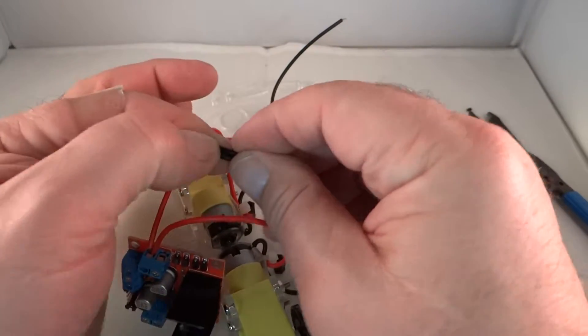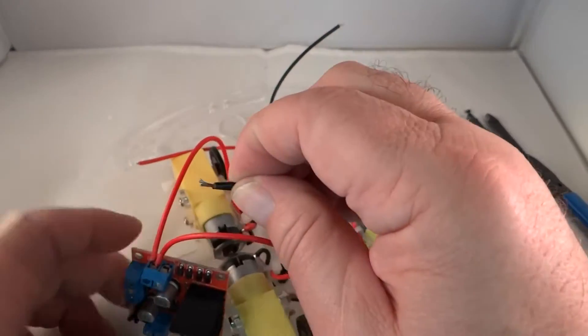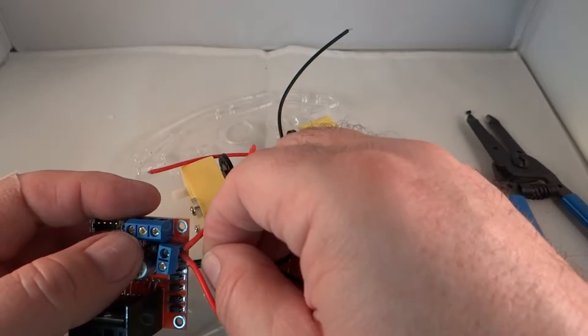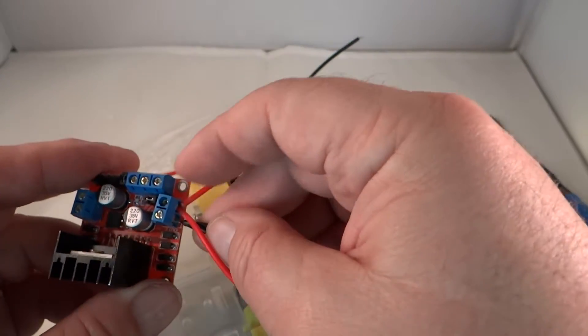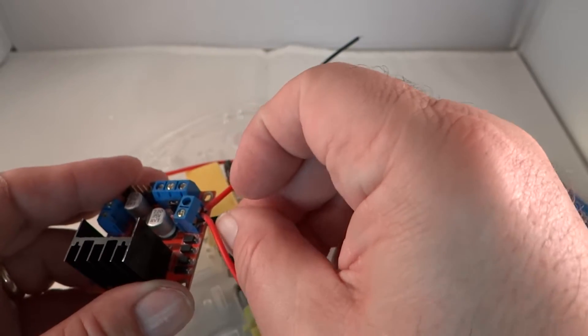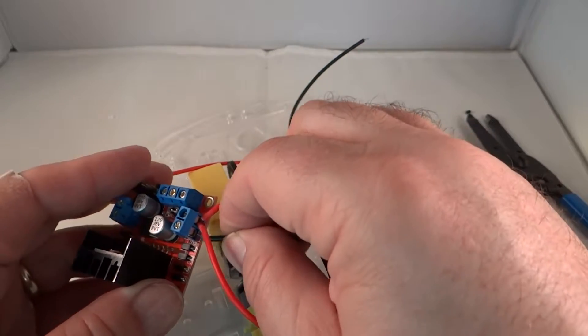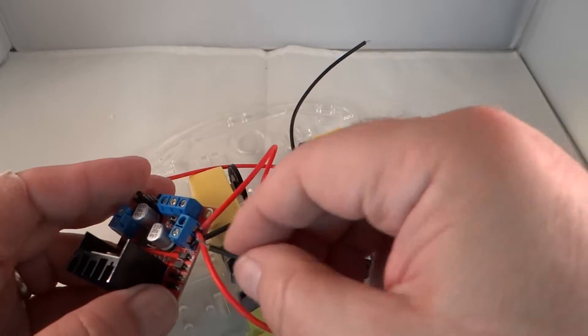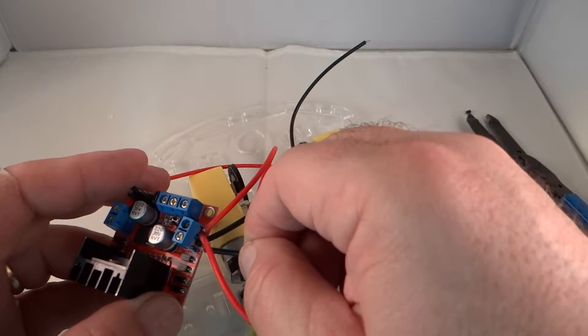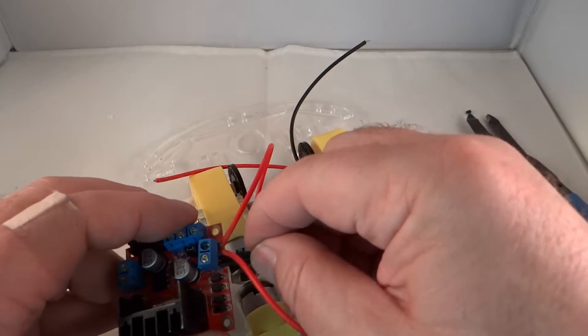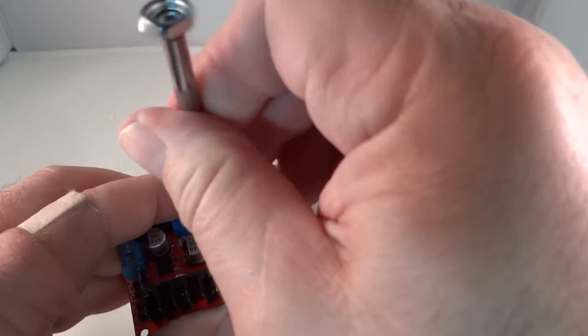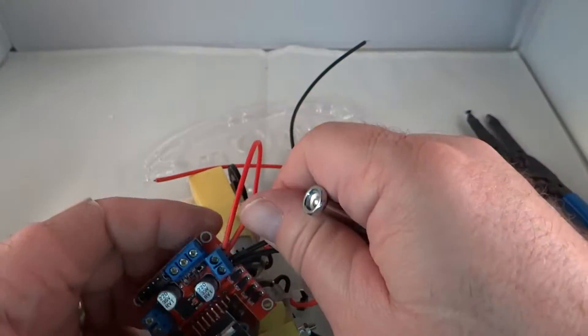I'm going to do that with the black. Two black wires. Push those in. Not wanting to go in. All right. Behave. There we go. Nice and tight. Pull test. Now we're good.